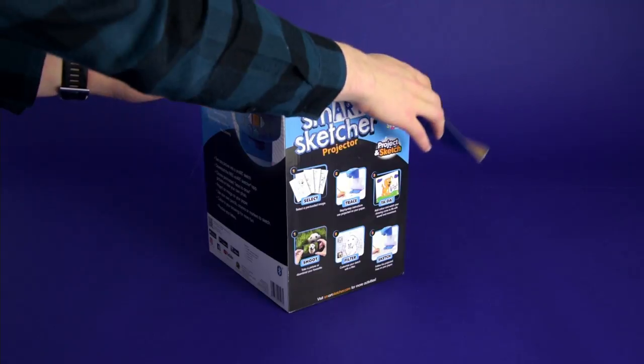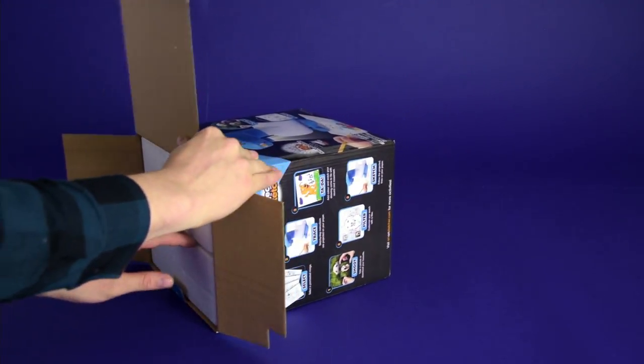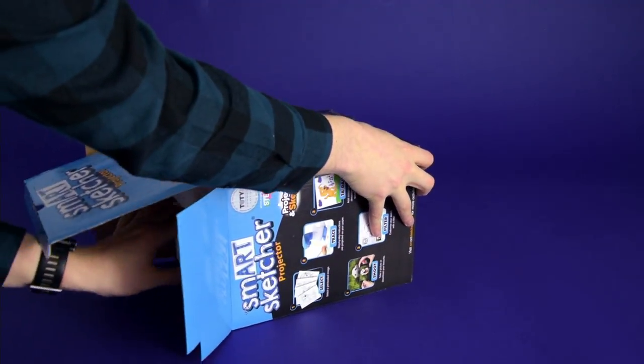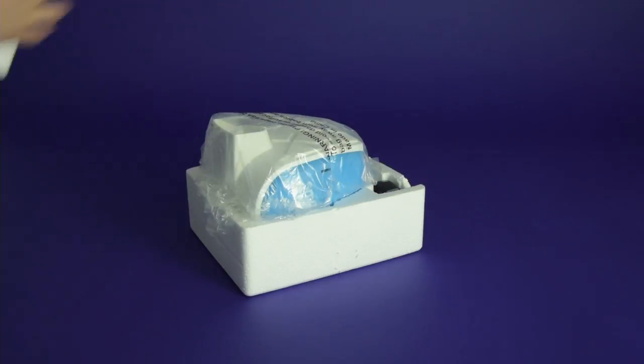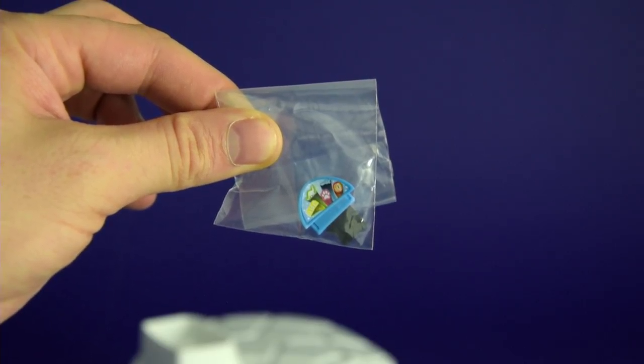First, take the polystyrene insert out of the main box. Lift one half off and you'll find the mains adapter and the pre-loaded activity card.